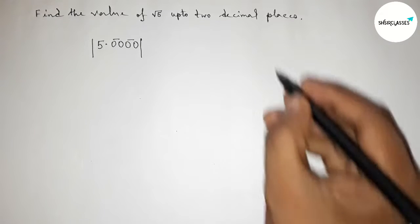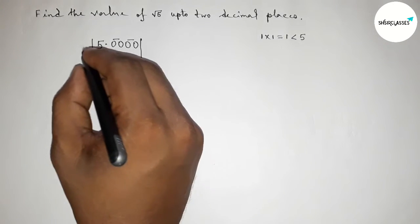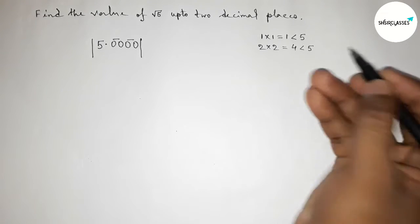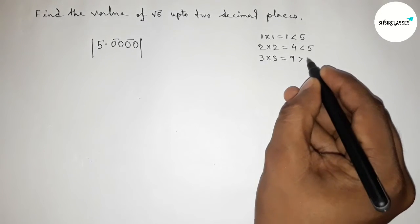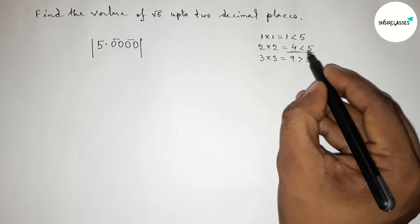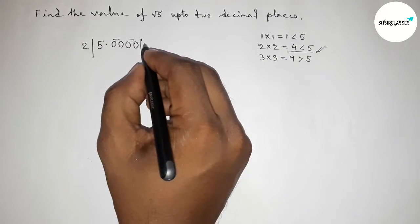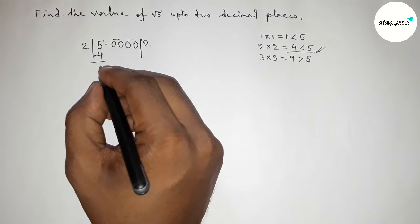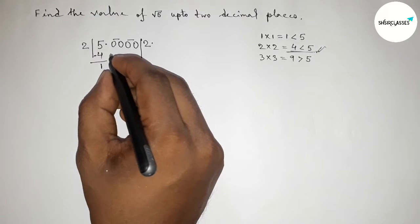Next, we choose a number and multiply it by itself. If we take 1, then 1×1=1, which is less than 5. If we take 2, then 2×2=4, which is less than 5. If we take 3, then 3×3=9, which is greater than 5. So we take 2 because 4 is closest to and less than 5. Write 2, giving 2×2=4. Subtracting from 5 gives remainder 1, then bring down the point.